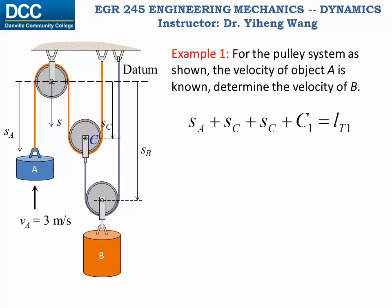And then for the second rope, the purple one, its total length equals to, this is SB minus SC, and plus SB, and then plus some constant length again, and that equals to the total length LT2.